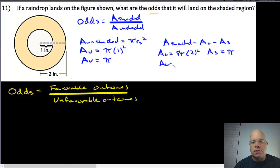So the area of the large circle is 4π. The area of the small circle is π. So the area of the shaded region is equal to 4π minus π, which is just 3π.